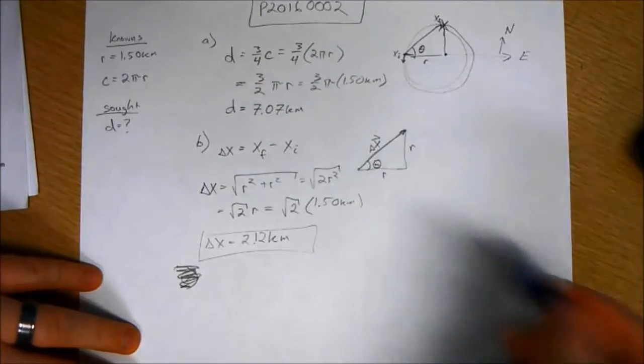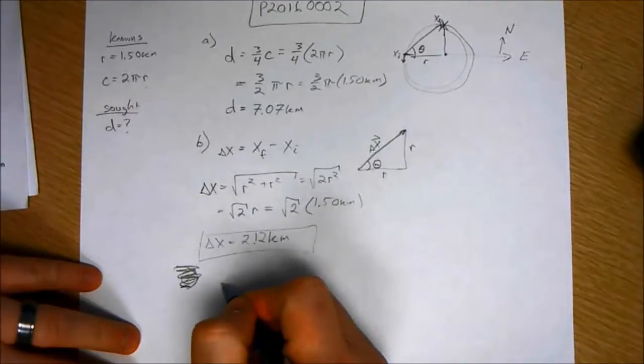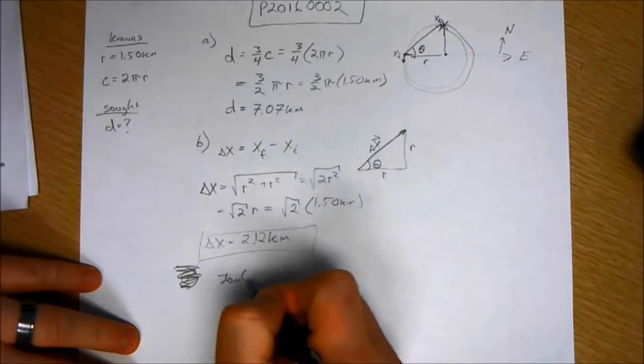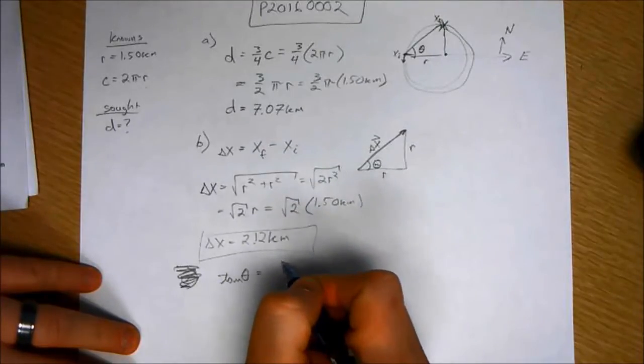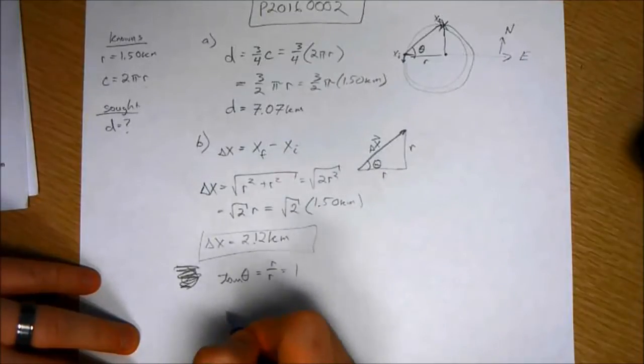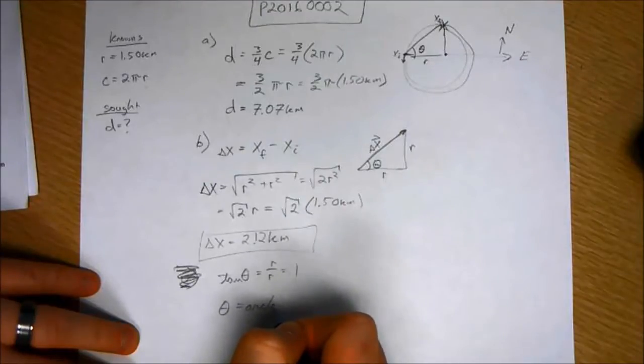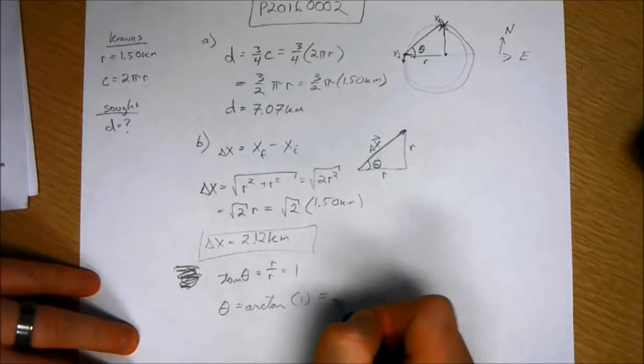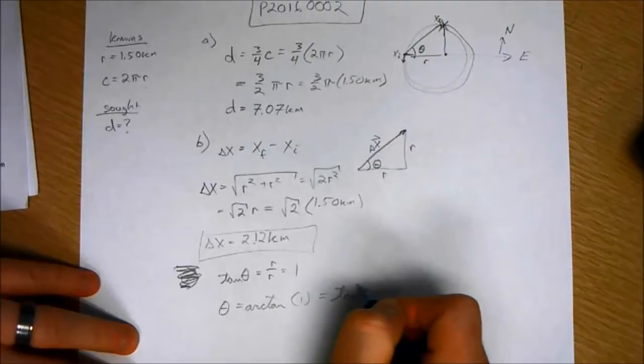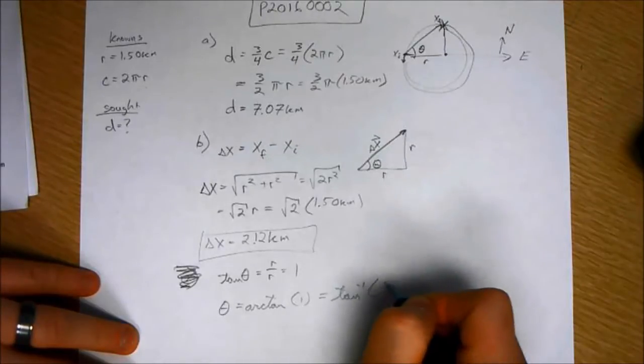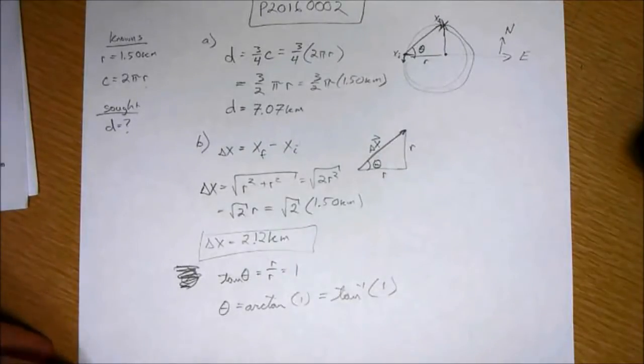So we have both sides. So we know tangent theta is going to equal opposite over adjacent, r over r, which equals 1. So theta is equal to arc tangent of 1, or you can also write it as negative inverse tangent of 1, same thing. Do I have a calculator?